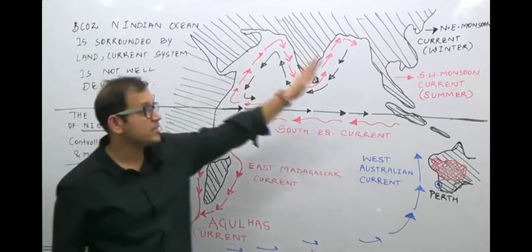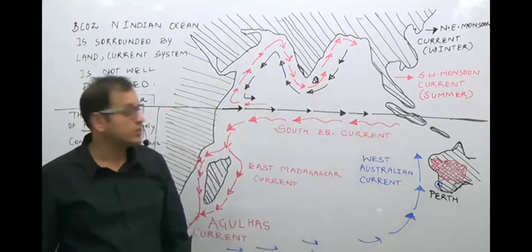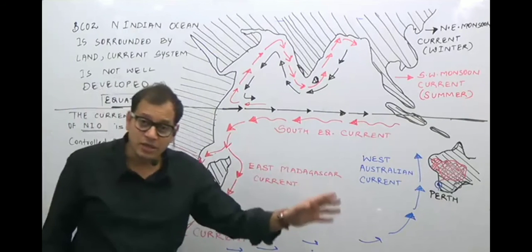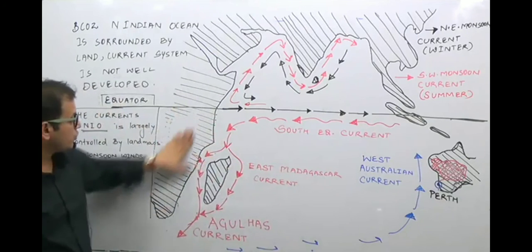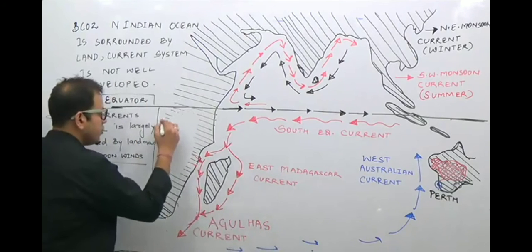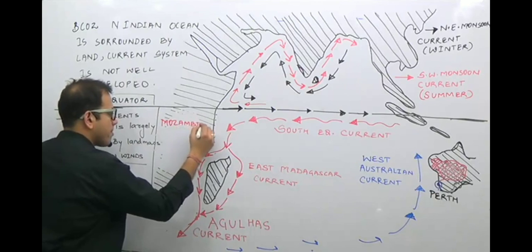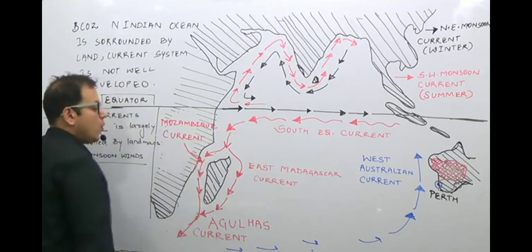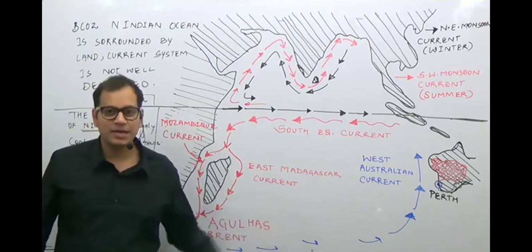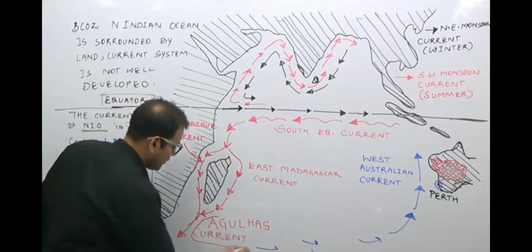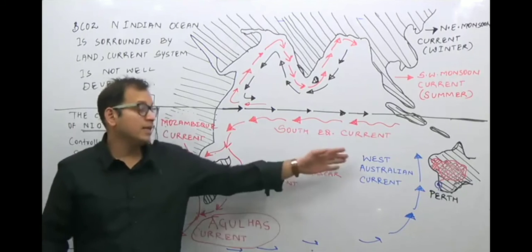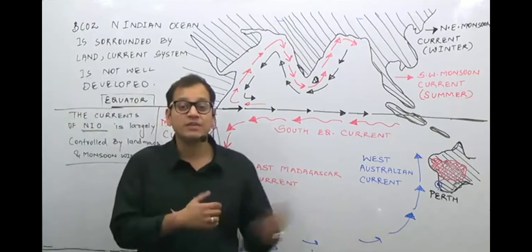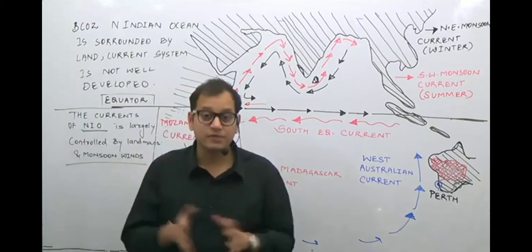The seasonal change appears as the Southwest Monsoon Current and the Northeast Monsoon Current in the Northern Hemisphere. In the Southern Hemisphere, the South Equatorial Current continues as the Mozambique Current flowing through the Mozambique Channel. One current flows to the eastern side of Madagascar as the East Madagascar Current. Both join to form the Agulhas Current at the southern tip of eastern Africa, while the West Australian Current is a cold current associated with the Great Australian Desert.